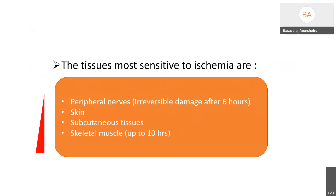The tissues most sensitive to ischemia are the peripheral nerves, in which irreversible damage occurs after 6 hours, followed by skin, subcutaneous tissue, and the skeletal muscles which get affected up to 10 hours.